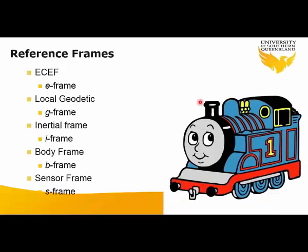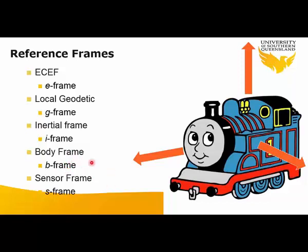The next two reference frames relate to the instrument. The body frame, or B-frame, is the reference frame of the moving platform — a car, UAV, or similar vehicle. The sensor frame, or S-frame, is not always exactly aligned with the body frame; it defines the plane of the X and Y accelerometers with the X axis aligned with the axis of the accelerometers.